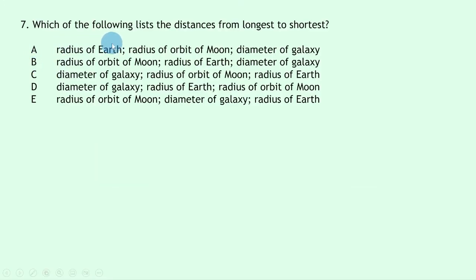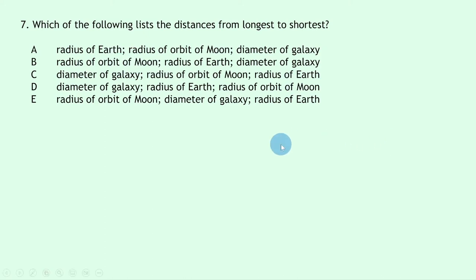Question 7 asks which list orders distances from longest to shortest among: radius of Earth, radius of orbit of the Moon, and diameter of a galaxy. The longest is the diameter of a galaxy, then the radius of the Moon's orbit since the Earth–Moon distance exceeds Earth's radius, and the shortest is the radius of Earth. This gives answer C.